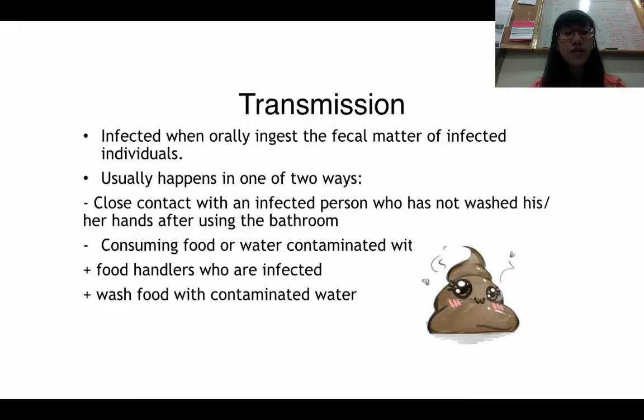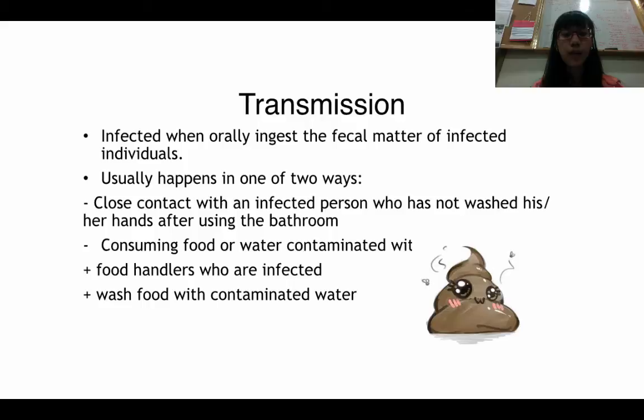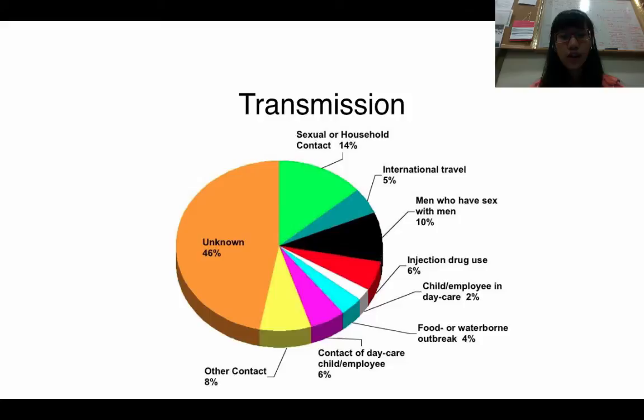How can Hepatitis A be transmitted? People get infected when they orally ingest fecal matter from infected individuals, and that usually happens in one of two ways. Typically it happens because someone comes into contact with an infected person who forgets to wash their hands, or, in the case of shellfish, because people consume food or water that is contaminated — either because they do not wash the food carefully or because the food handler forgets to wash their hands.